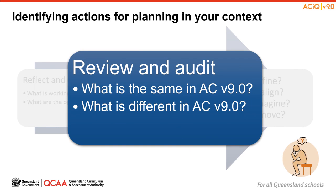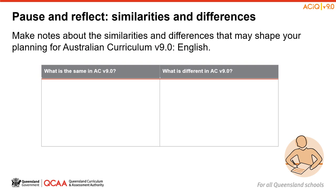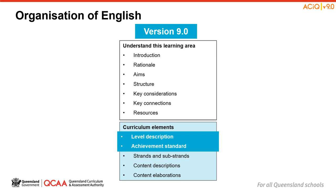As we work through each element of the English Curriculum Elements section and the changes we can see in version 9, let's keep our process for identifying actions for planning in mind. Here is where we can begin to audit our current programs and consider what is the same in Australian Curriculum Version 9 and what is different. You may wish to construct your own note-taking template to help you identify the similarities and differences you notice in the Australian Curriculum Version 9 for English that may shape your planning for the new curriculum. A table has been provided for you in the Session 2 Outline resource.